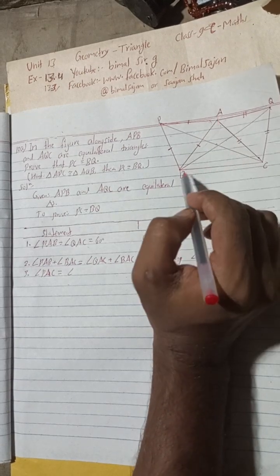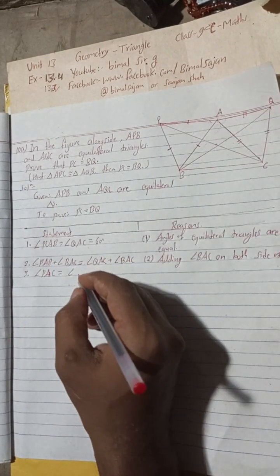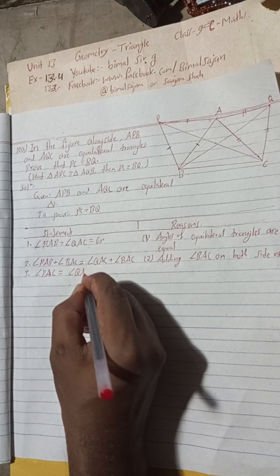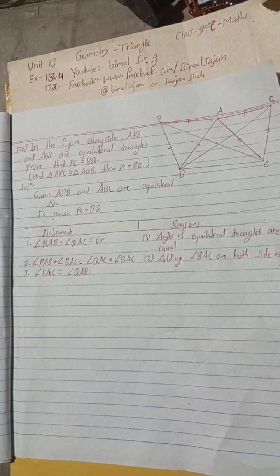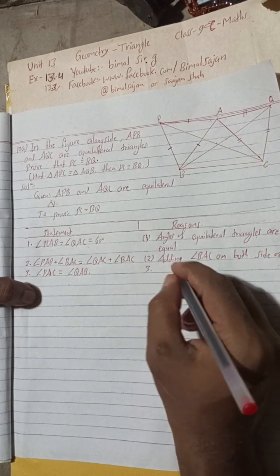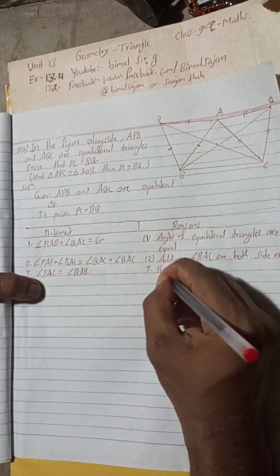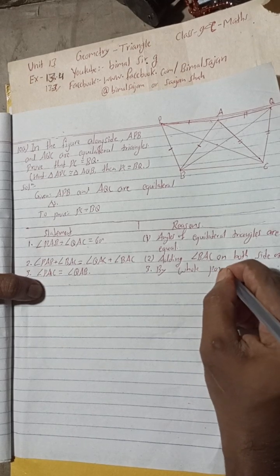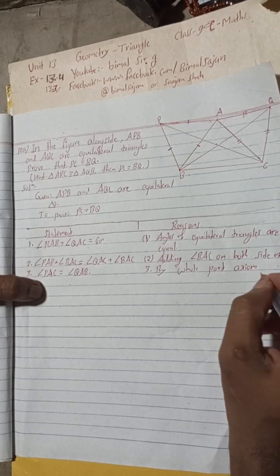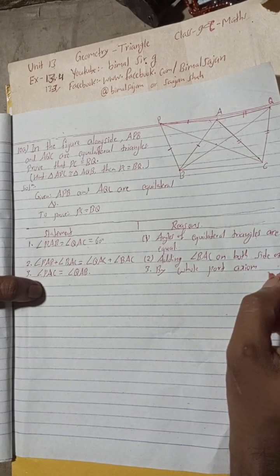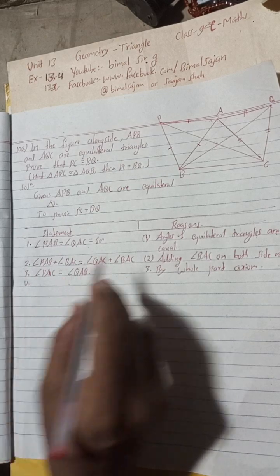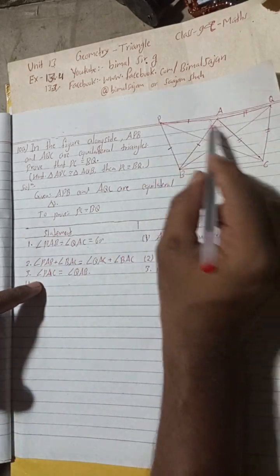Now here, number three, this is called whole part axiom. By whole part axiom, we get angle PAC equal to angle QAB.